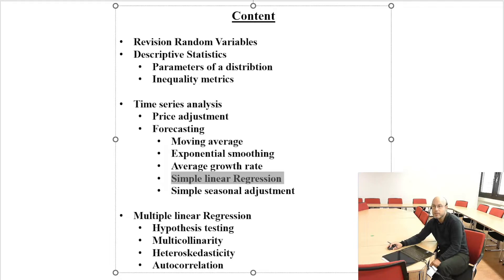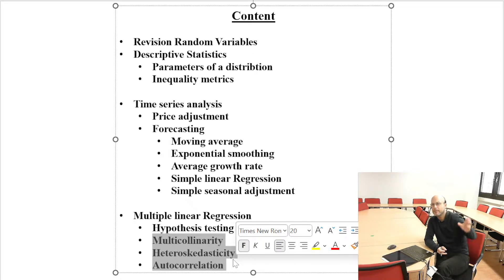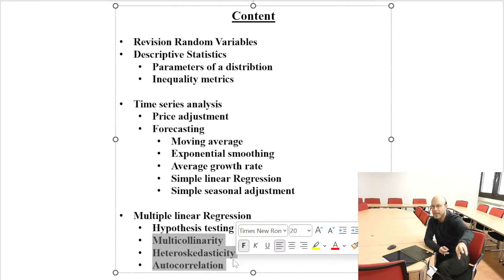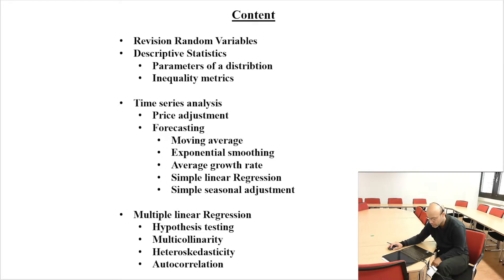For multiple linear regression, we want to know how good our model is — this is the so-called hypothesis testing. Then we want to talk about the three main problems in multiple linear regression: multicollinearity, heteroskedasticity, and autocorrelation. Autocorrelation means you don't know if variable A causes variable B or if variable B causes variable A — that is the classical chicken-and-egg problem.